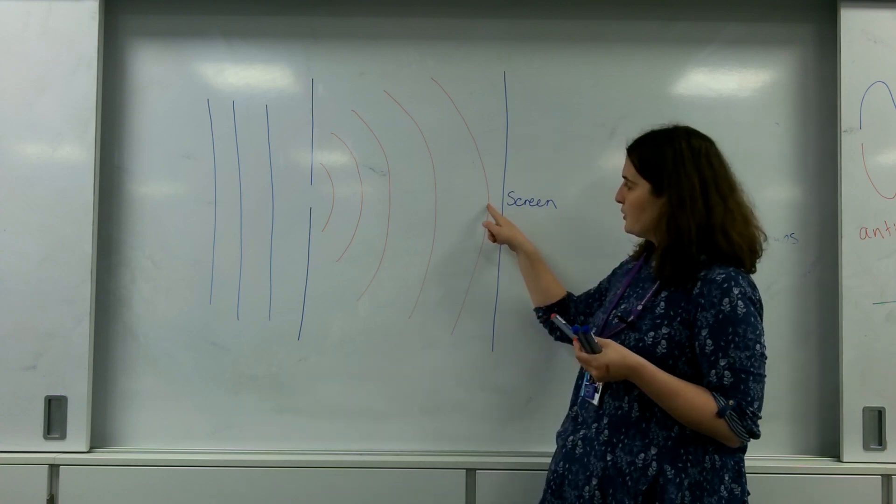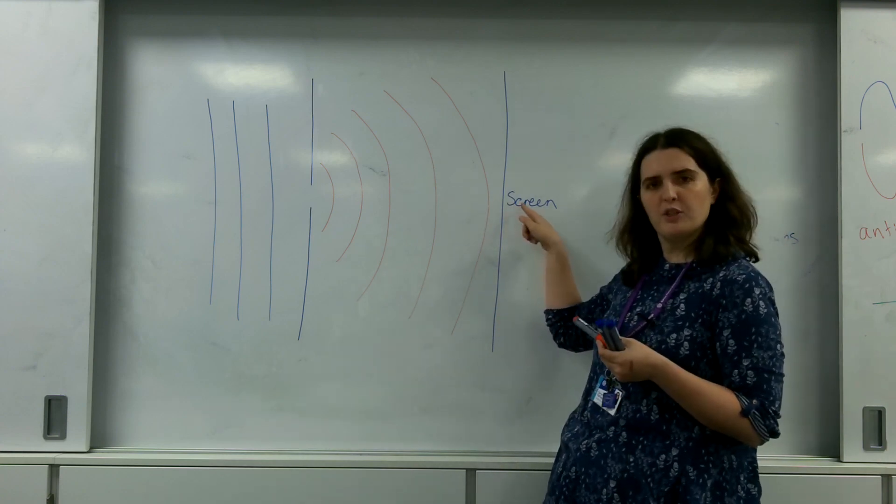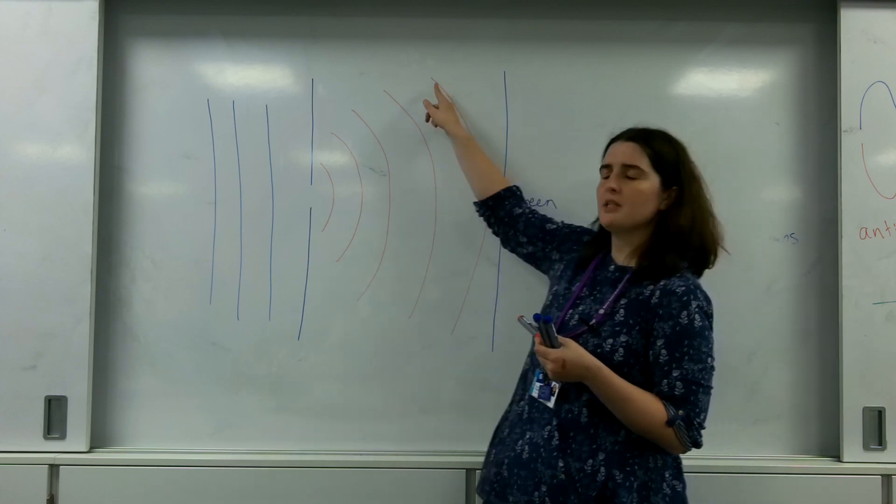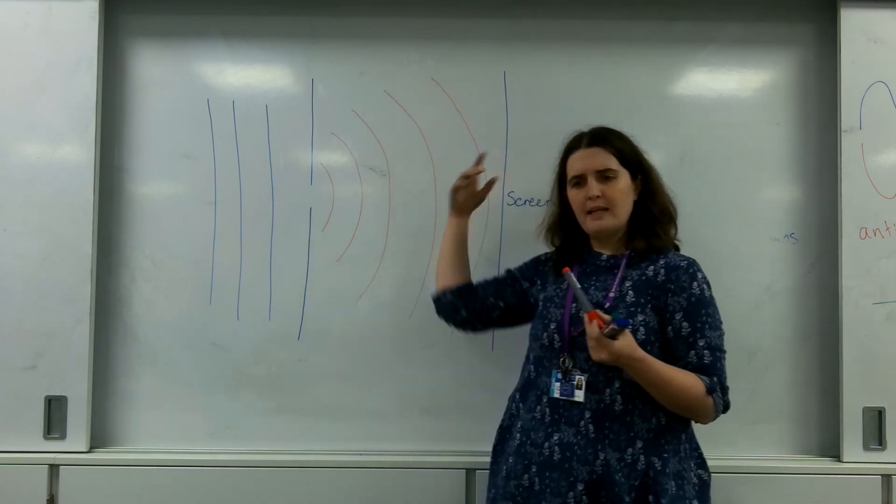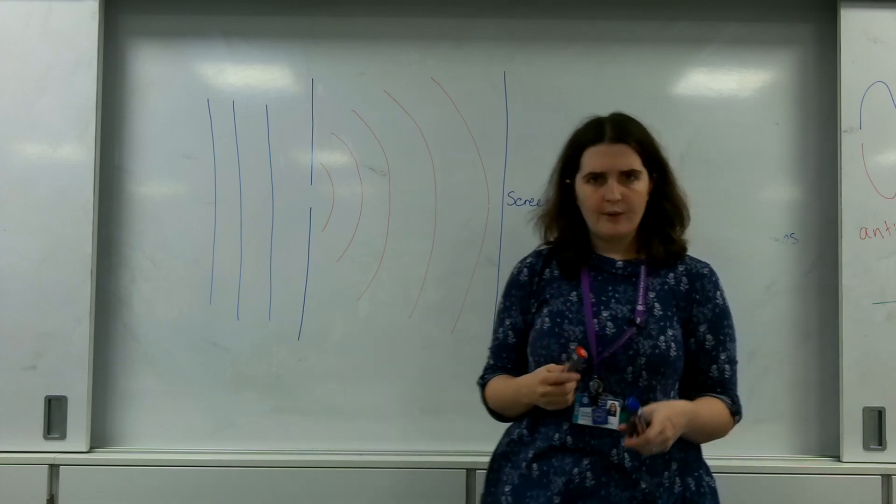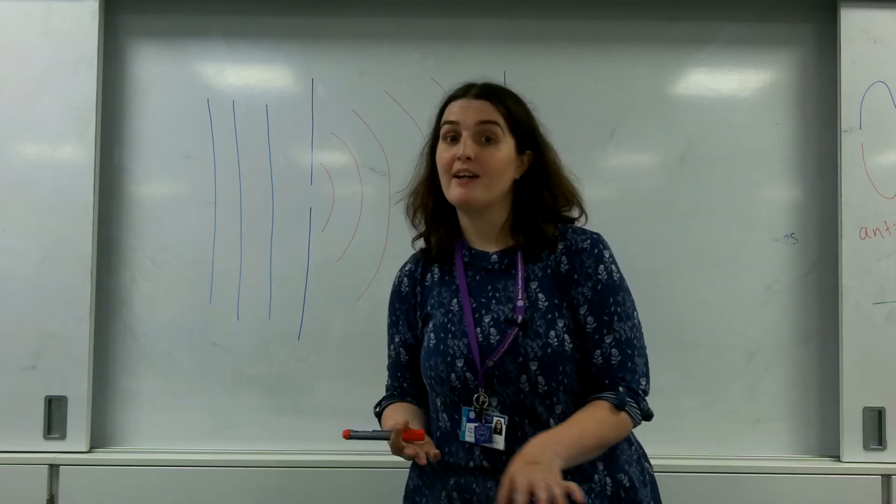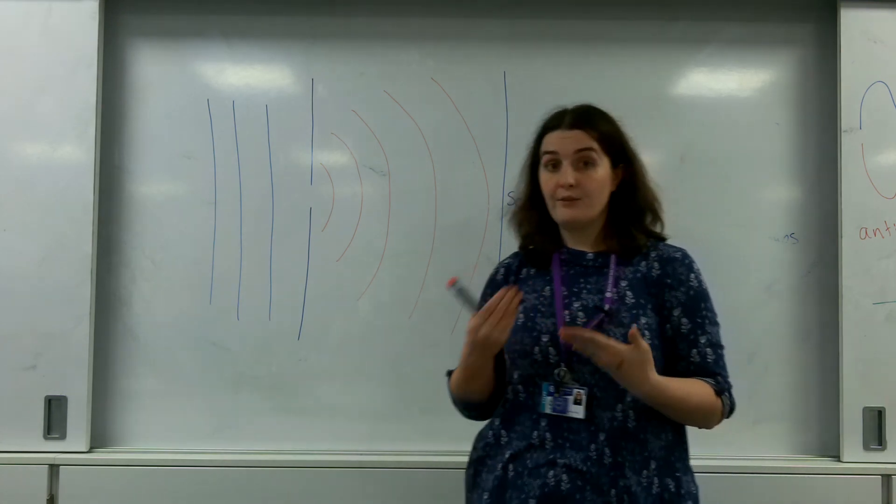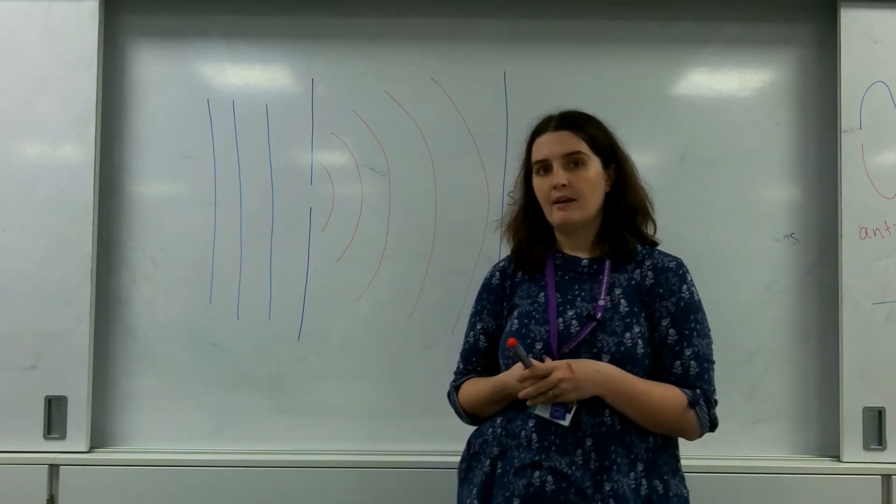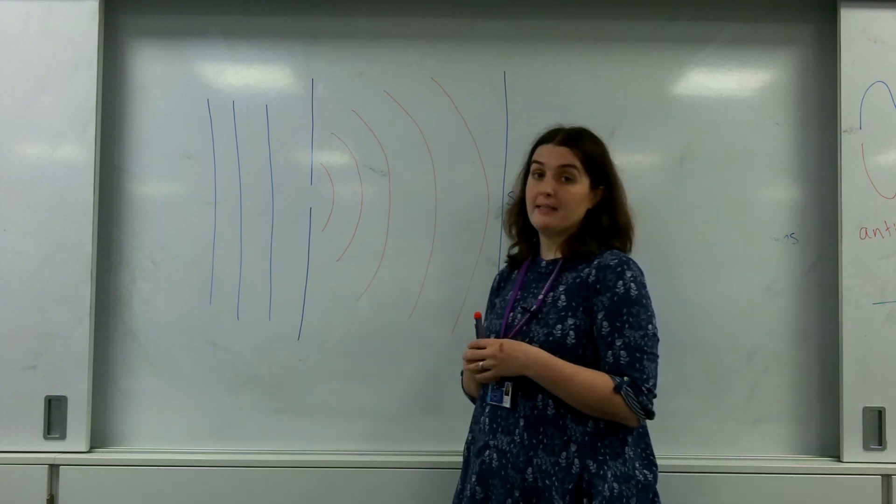So this wave, this part of the wave will reach the screen quite soon, while this one's going to take a little bit longer. This means if we're looking, what happens is the wave starts interfering with itself. And you start getting interference happening. You get an interference pattern.